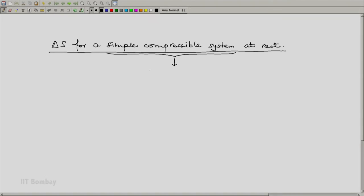Simple compressible system means that there is only one two-way mode of work, and that is expansion compression. This means dw, this expansion compression would be pdv.